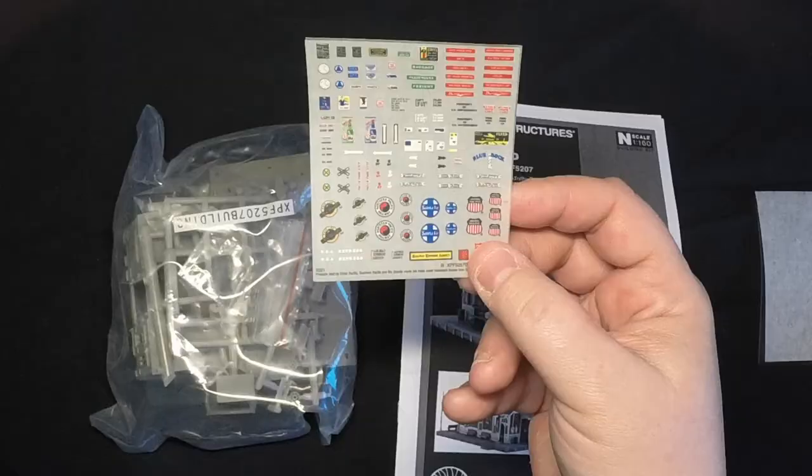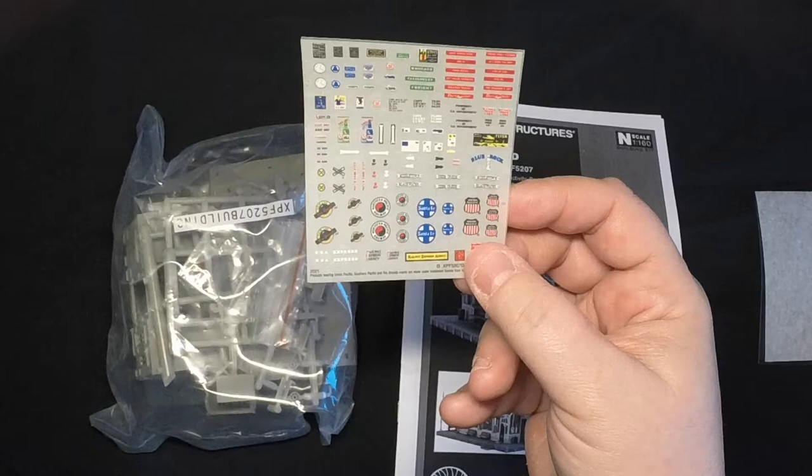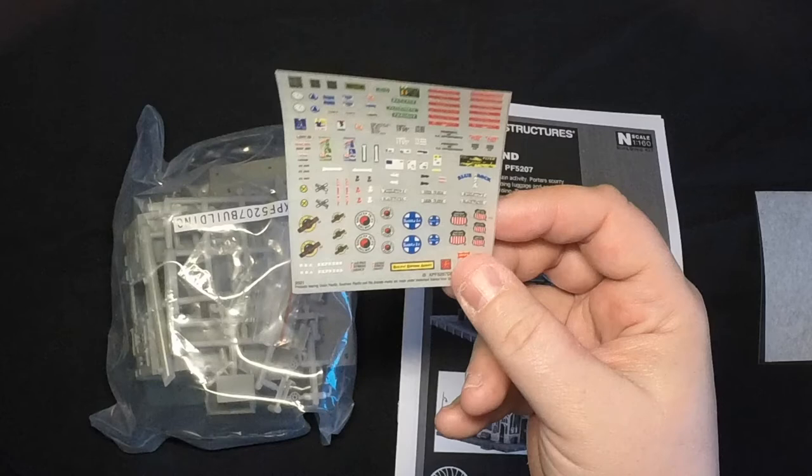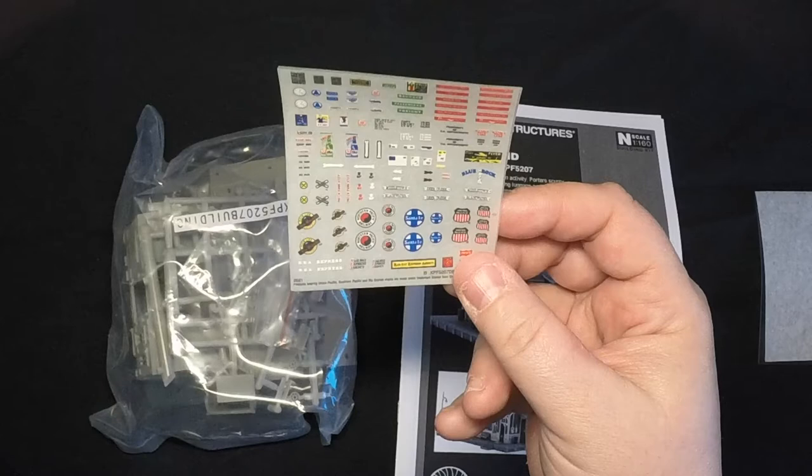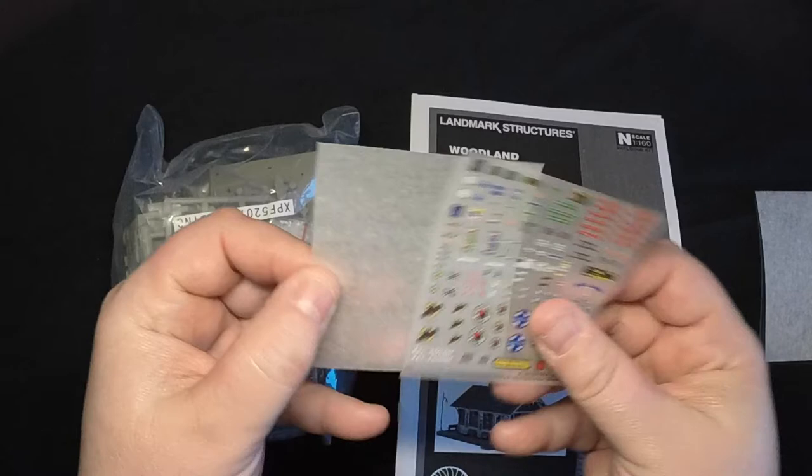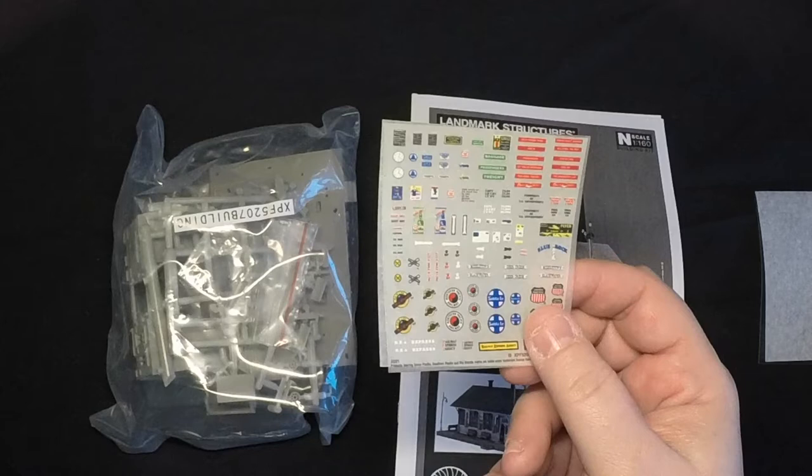It has this sheet of dry transfer decals. This includes signage for the station and advertising, railroad signs, and logos for four different railroads: the Rio Grande, the Northern Pacific, the Santa Fe, and the Union Pacific. It has its own protective film, and you definitely want to keep that together, otherwise these decals could transfer themselves onto something you don't want them on.